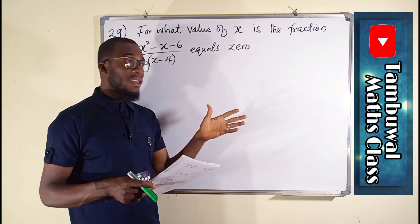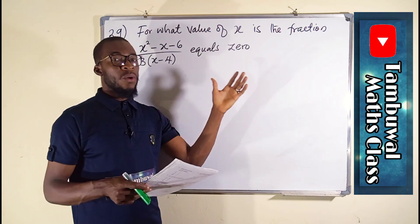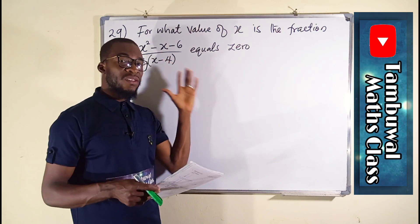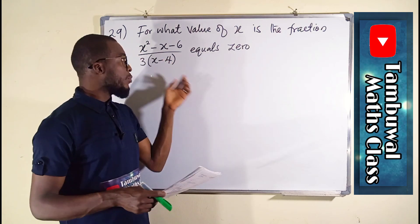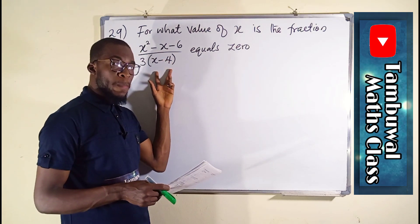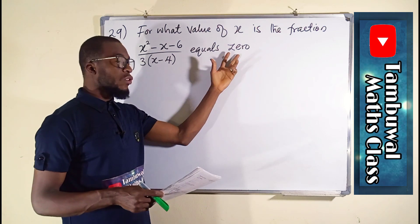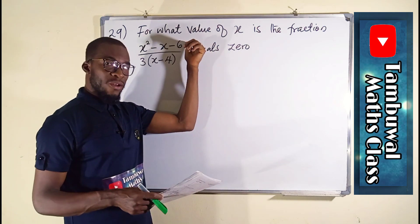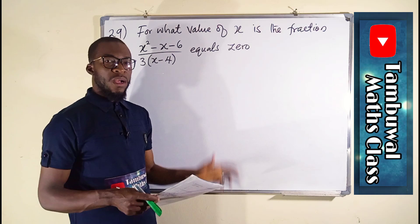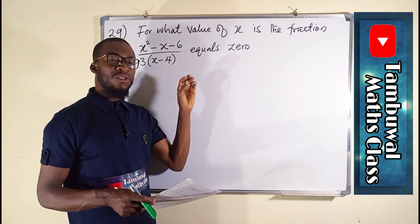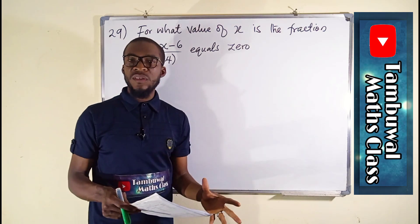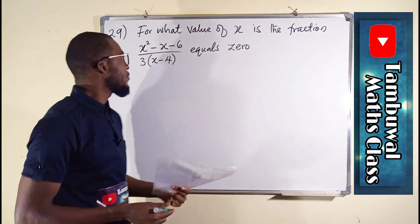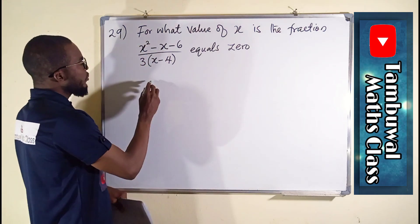When an algebraic fraction says undefined, it means the denominator is equal to 0. But when it says equal to 0, it means the numerator is equal to 0. Therefore, in this exploration, we are going to set the numerator to be equal to 0 and solve for the value of x.